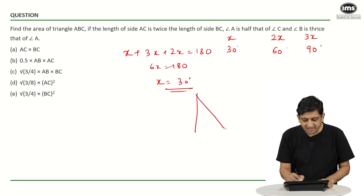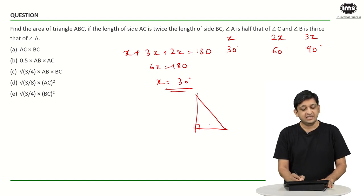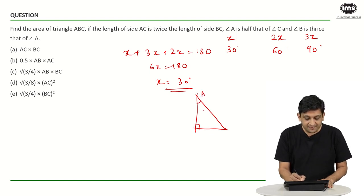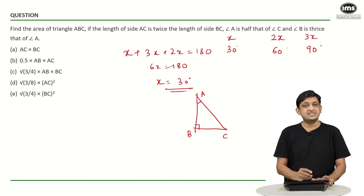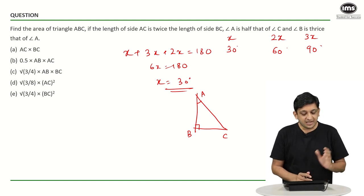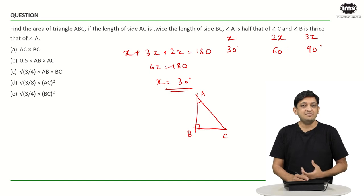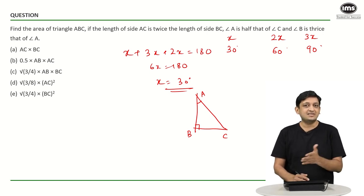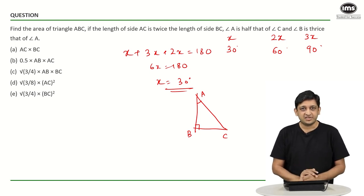Let's look at what the triangle looks like. Angle B is 90 degrees, angle A is 30 degrees, and angle C is 60 degrees. The length of side AC, the hypotenuse, is twice that of side BC — this confirms it is a 30-60-90 triangle.